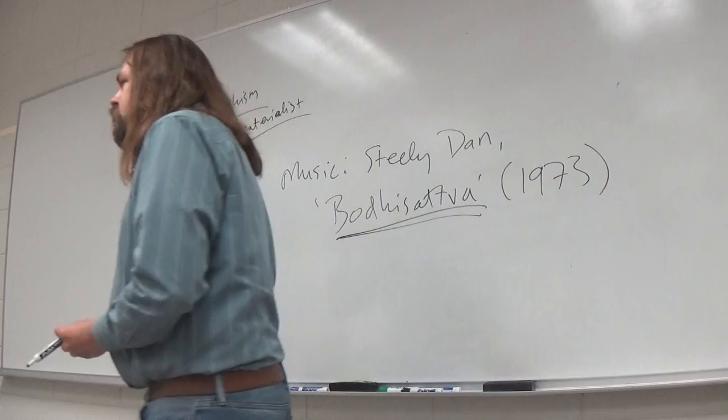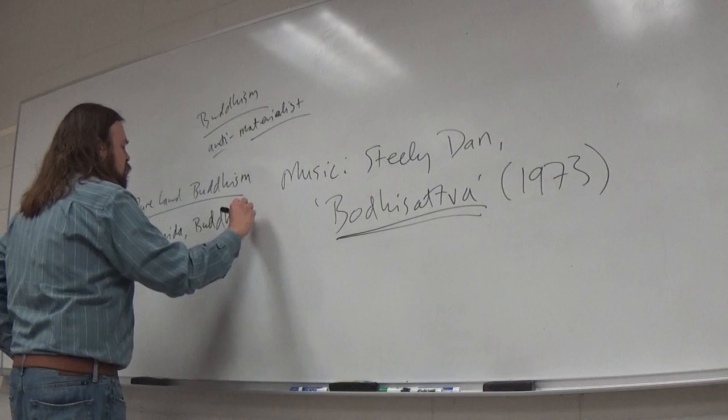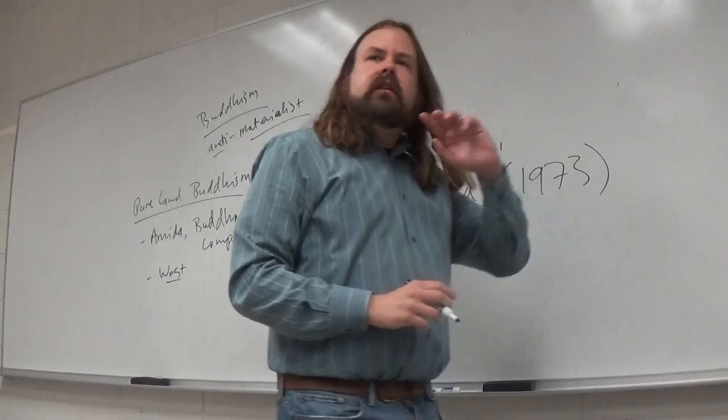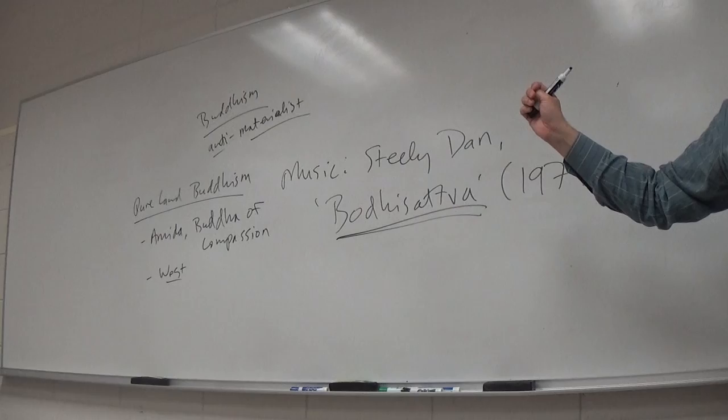The school of Buddhism we're most concerned with today is called Pure Land Buddhism. It's today the second largest Buddhist school in Japan, the largest being Zen, but it was really in vogue in the 12th through 14th centuries. It has a big impact on the way this particular text is shaped. Pure Land Buddhists call on Amida, the Buddha of Compassion, who was associated with the West.